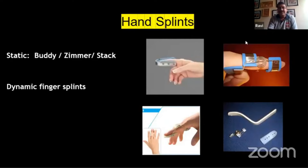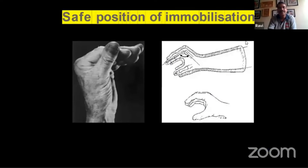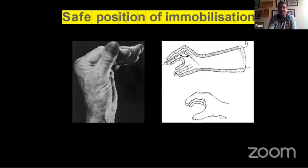Hand splints basically have two subtypes: static splints and dynamic splints. One should be familiar with the commonly available splints and the indications for each. One cannot overemphasize the safe position of immobilization, described by James — also known as the Edinburgh position. This involves the MCP joints in 70 to 90 degrees flexion, the wrist in about 30 degrees dorsiflexion, and the IP joints kept extended. This pre-tensions the collateral ligaments, ensuring a good functional outcome after fixation or splintage.